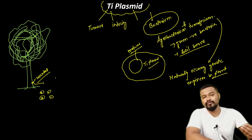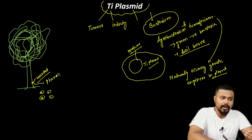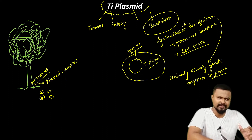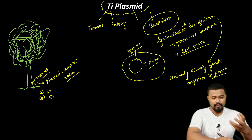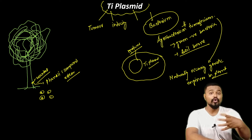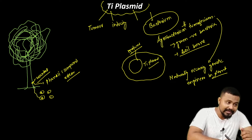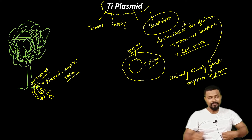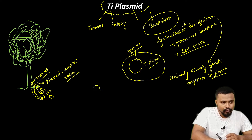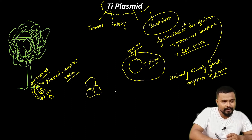When a plant is wounded, it releases phenolic compounds as a defense mechanism. These phenolic compounds act as chemical signals that attract Agrobacterium tumefaciens bacteria toward the wounded plant cell.